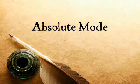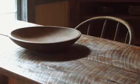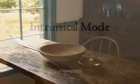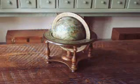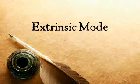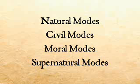Absolute mode is a property that refers and belongs to its subject without respect or regard to any other being whatsoever. For example, the roundness and smoothness of a bowl belongs to that bowl regardless of any other object. A relative mode is derived from the regard of that object to another object — for example, a bowl being greater or smaller than another bowl. An intrinsical mode is conceived to be in the subject or substance — for example, a globe is round. An extrinsical mode belongs to an object but is not in the subject — for example, saying 'I love this bowl' is not part of that bowl. There are also natural, civil, moral, and supernatural modes.